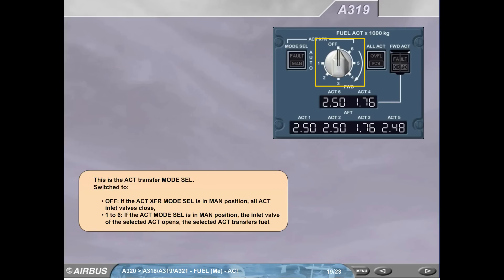This is the ACT transfer mode selector. Switch to OFF: if the ACT transfer mode selector is in manual position, all ACT inlet valves close. 1 to 6: if the ACT mode selector is in manual position, the inlet valve of the selected ACT opens, the selected ACT transfers fuel.